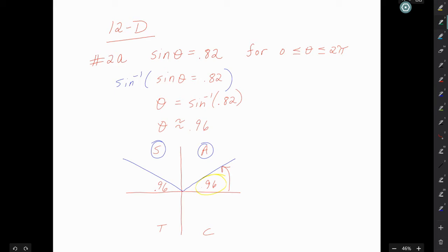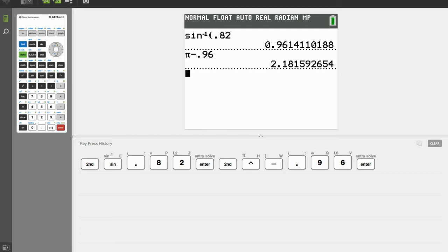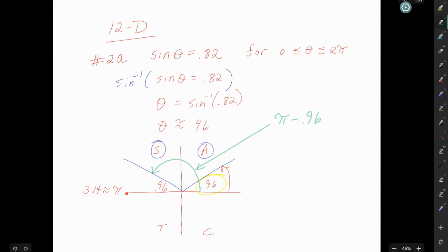All the way over to here. This is π, that's approximately 3.14. So we're not quite going all the way to 3.14. We're going to have to subtract out this reference angle of 0.96. So that green angle, we would have to do π minus 0.96, and we get 2.18. So the other solution here is 2.18. We have 0.96 and 2.18.